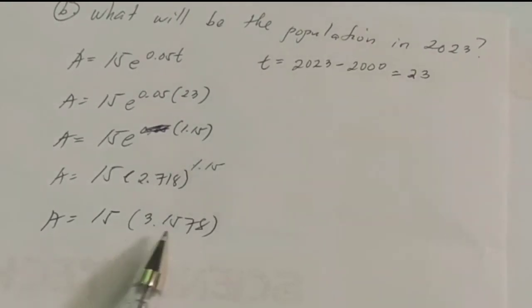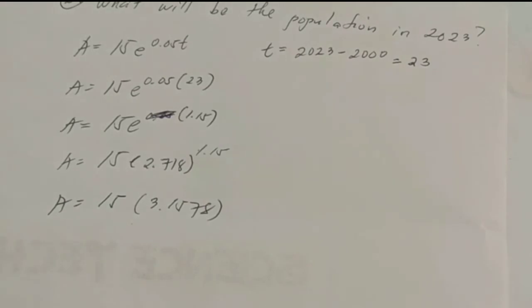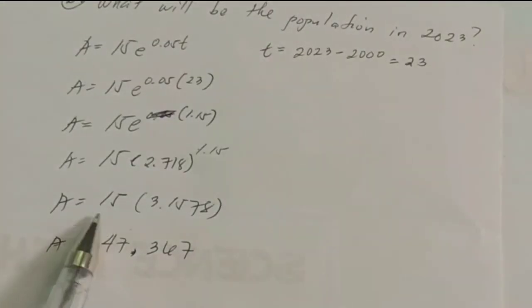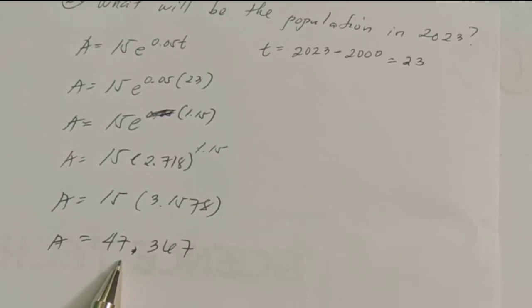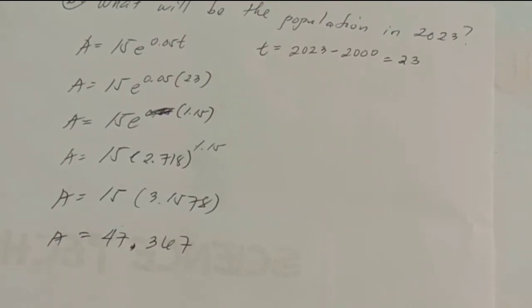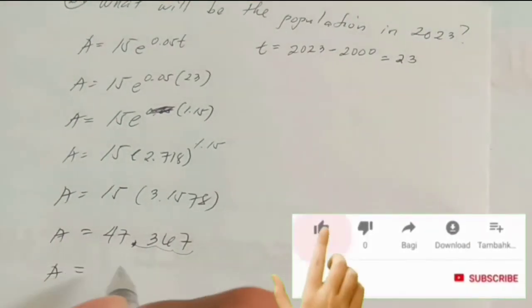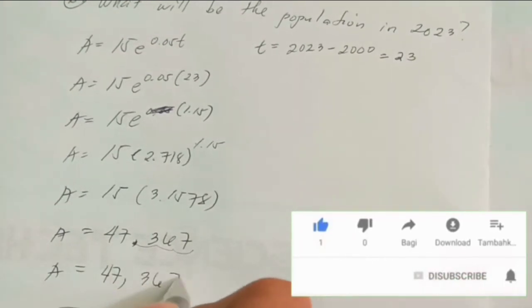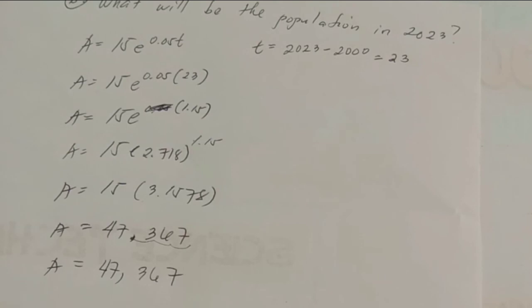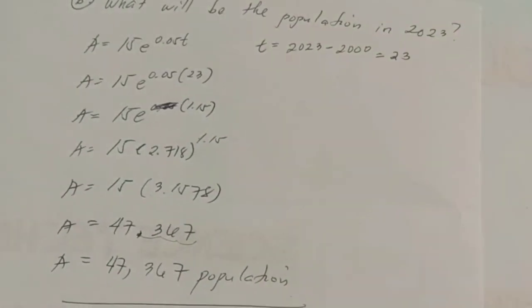Multiply 15 times 3.1578. Answer would be 47.367. Again, it's in thousands, so just simply move the decimal. Therefore, the population in 2023 is 47,367. That is the final answer.